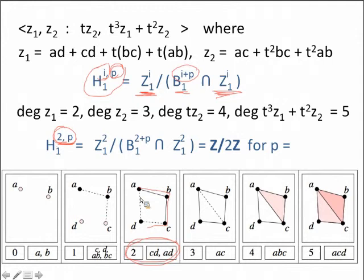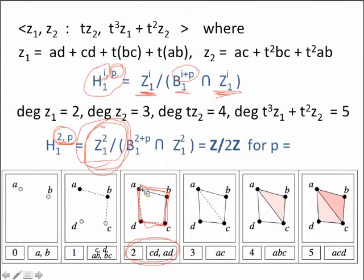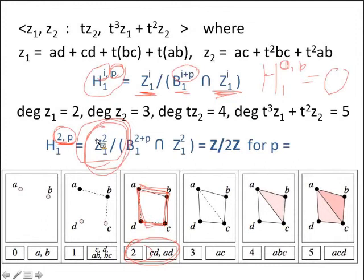We could have started at time 1, but the first interesting case is at time 2. Before time 2, we don't have any cycles. If I take a look at H-1 of 1, P, that will be zero because I don't have any cycles — no nice closed cycles before that. Same thing at time 0. So the first interesting case is at time 2 — that is when we start creating the cycle.